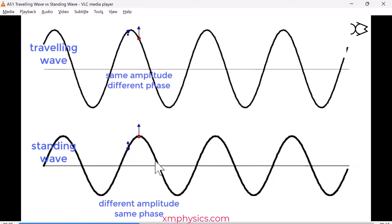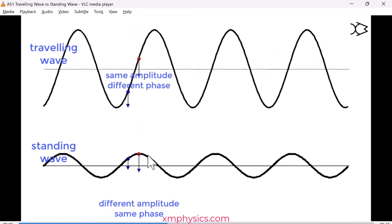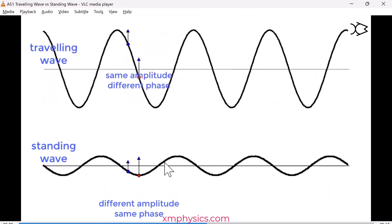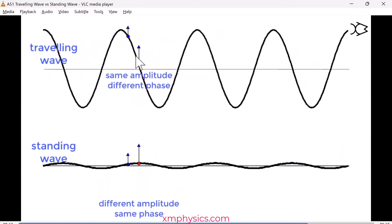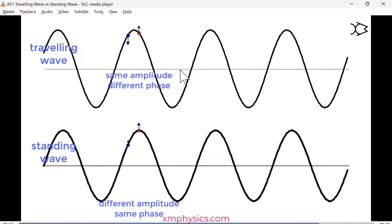But what about the oscillations in this loop and this loop? Then these two are completely out of phase. Completely out of phase. So see the difference between traveling wave and standing wave? For the traveling wave, two points one wavelength apart will be completely in phase, two points half a wavelength apart will be completely out of phase. And these two points will be 90 degrees out of phase.